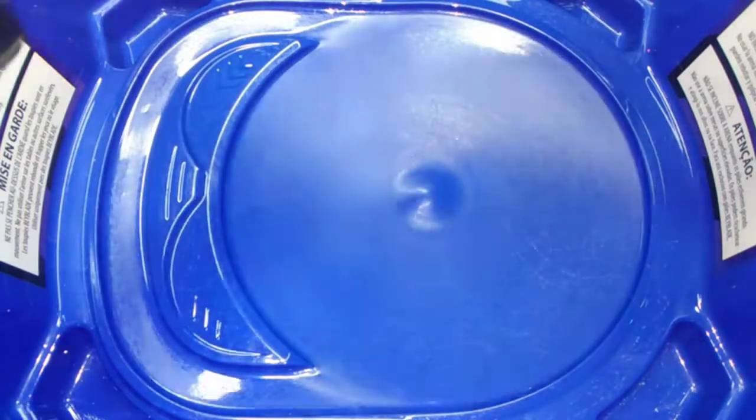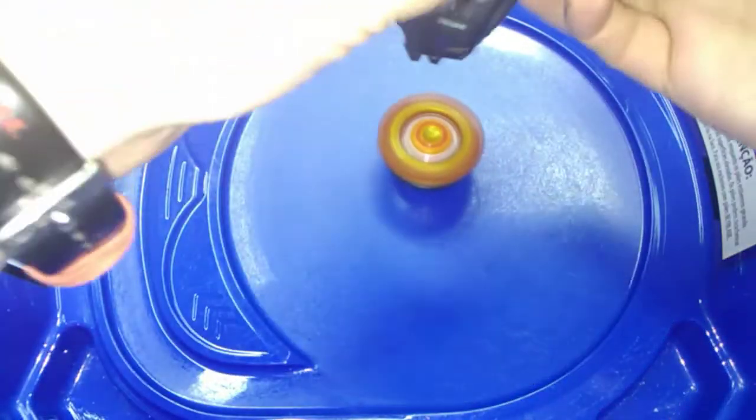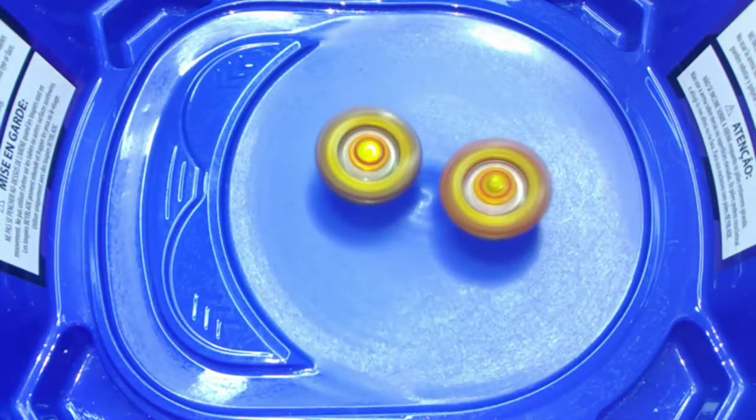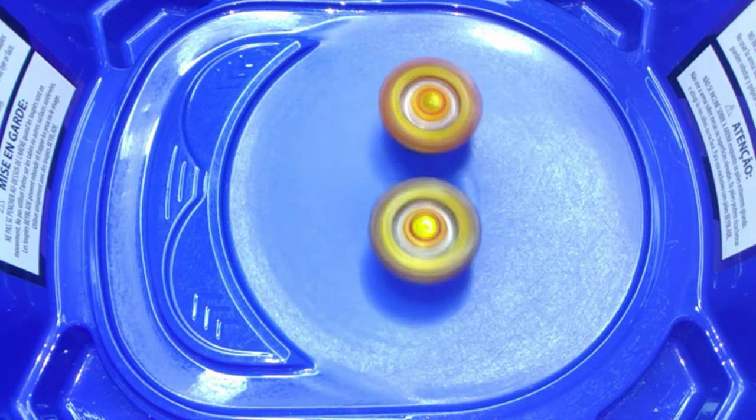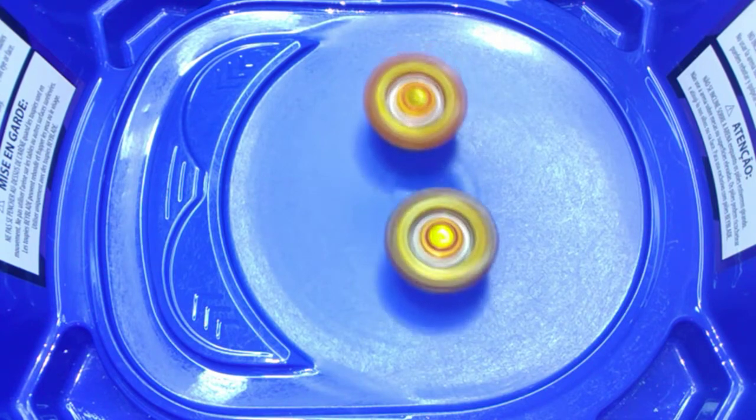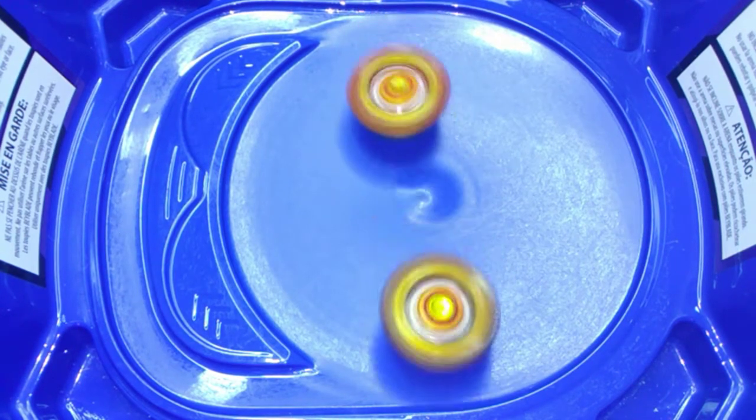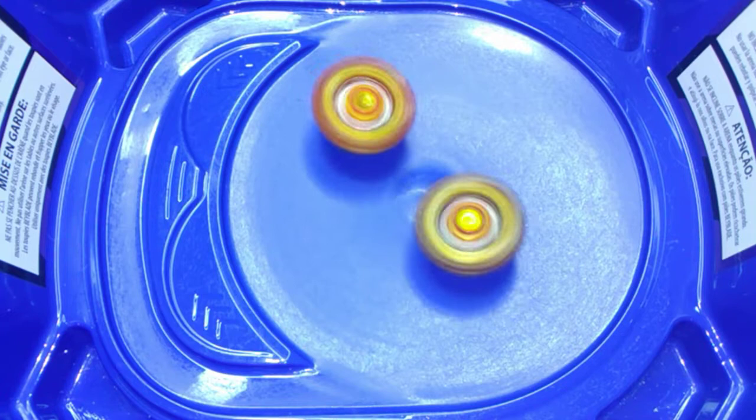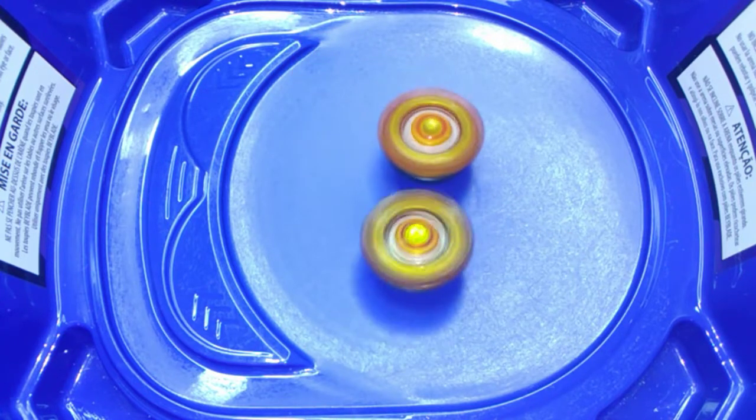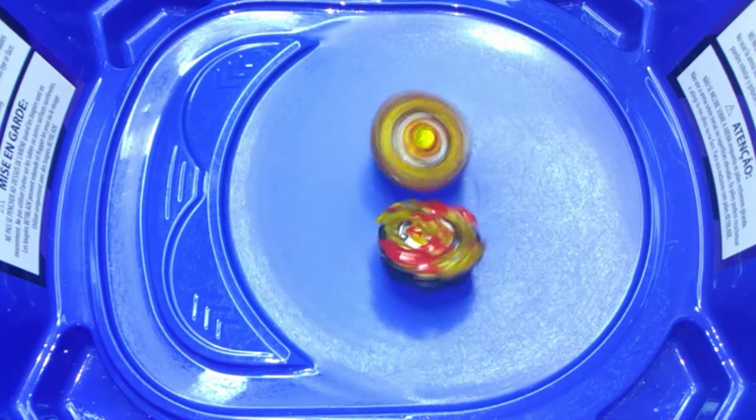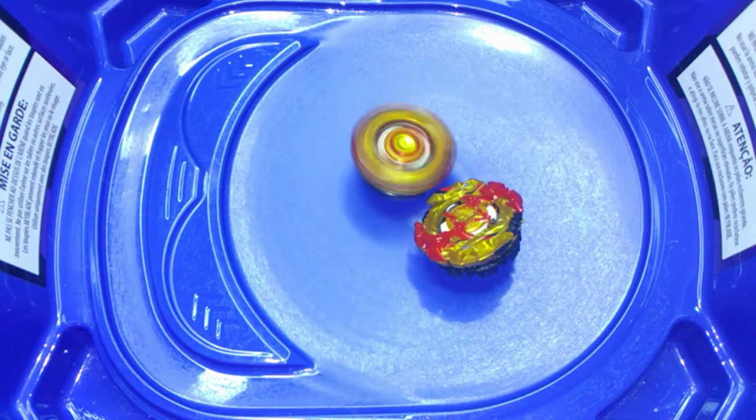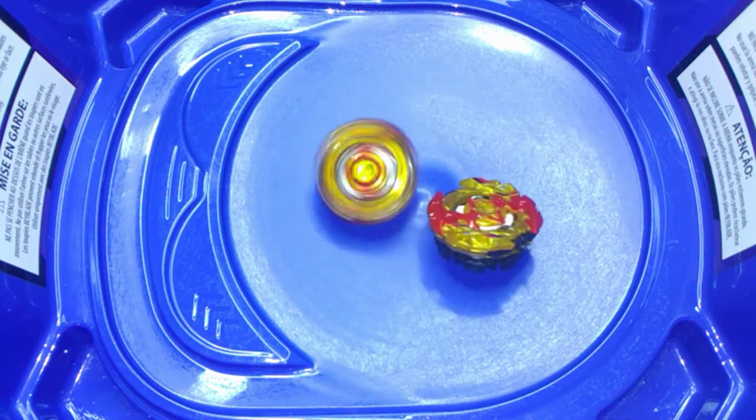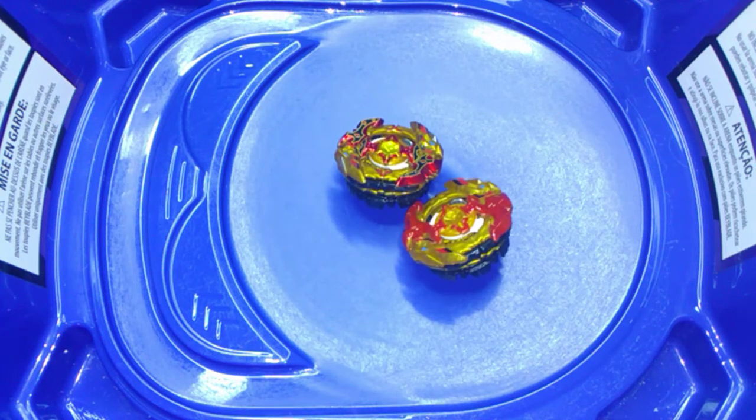Round number two for this second half. There we go, that mound does an excellent job of separating these bays by that little bit, but bouncing it off each other well, clashing here in the centre nicely, and, oh, Cho-Z Spriggan getting the Survivor victory this time, taking out Turbo Sprizen off-bounce.